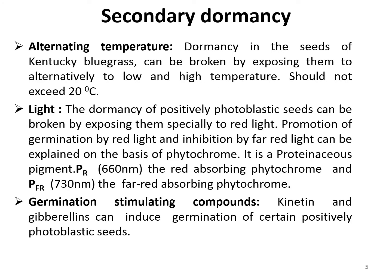The next method is alternating temperature. Dormancy in seeds of Kentucky bluegrass can be broken by exposing them to alternately low and high temperatures. The difference between the two extremes should not exceed 20 degrees. The next method is light. The dormancy of positively photoblastic seeds can be broken by exposing them specifically to red light. This effect is neutralized by exposure to far-red light.